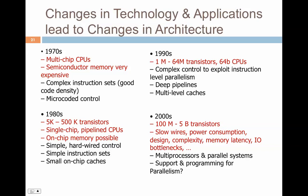In the 2000s, transistor counts went from 100 million up to five billion. A new issue emerged: wires are slowing down. Wires are a function of resistance and capacitance, and as you scale they don't scale as fast as transistors. So wires became slower while transistors became faster. Power consumption became a bigger problem, along with design complexity, memory latency, and I/O bottlenecks. We moved to multi-processors and multi-core systems, and we also need programming support to keep these cores engaged and busy.